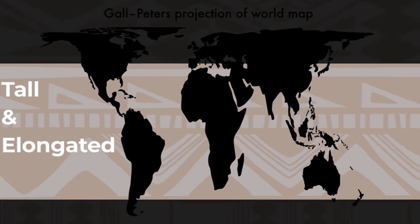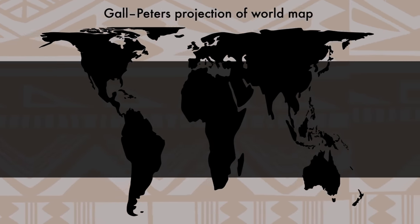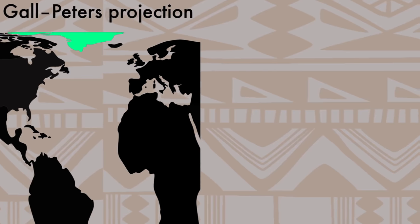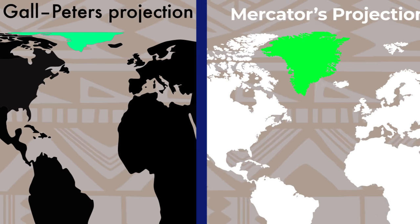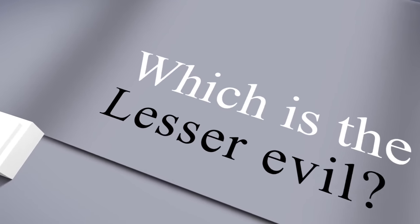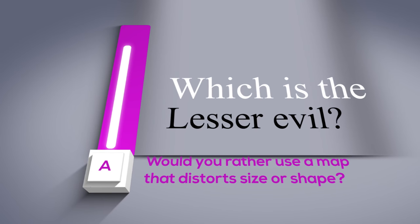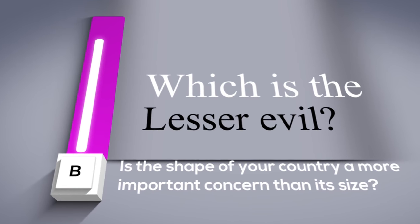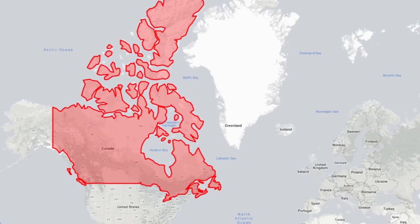Notice how the countries in the center of the Gall-Peters map are tall and elongated, whereas those at the top and bottom are flat and wide. Gall-Peters may get the size of Greenland correct, but when viewed from above in real life, Greenland's true shape is much closer to what the Mercator projection shows. So which is the lesser evil? Would you rather use a map that distorts size or one that distorts shape? Is the shape of your country a more important concern than its size?